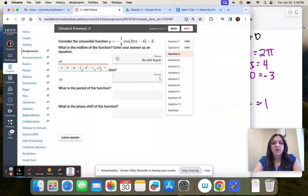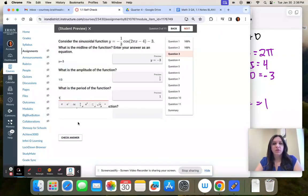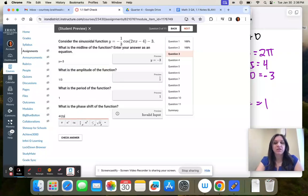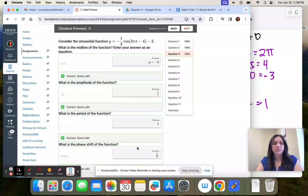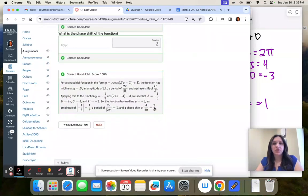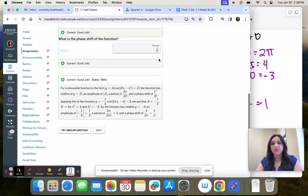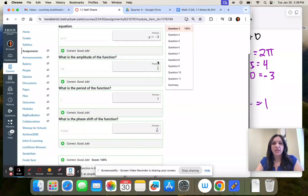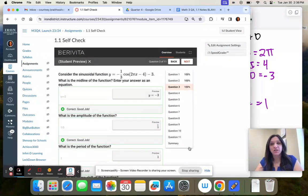So y equals negative three. The period was one. And then the phase shift was four divided by two pi. And we could have reduced that to two over pi. I should have. But I knew it would take it unreduced. So I just left it like that. So you've got options there. It'll still mark it right, even if you don't reduce.